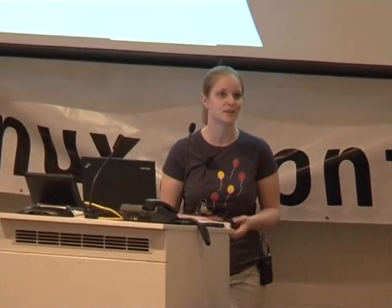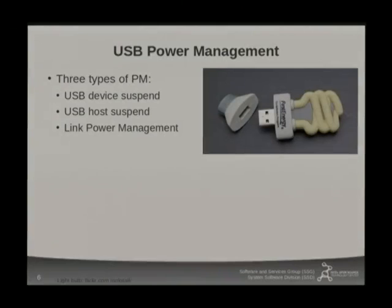Let's talk about how USB power management is supposed to work. There are three types of USB power management. First, you can put a USB device into a lower power state — you can put the device into suspend. Once all devices attached to a particular USB host controller are suspended, you can put the host controller into suspend, so it goes into a deeper PCI power management state. There's also USB link power management, a more recent type of power management, where you can put individual links in the whole tree of USB devices into a lower power state.